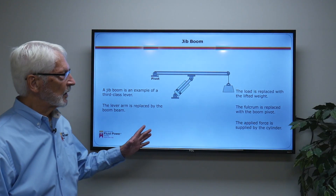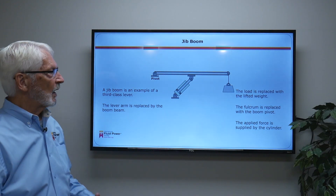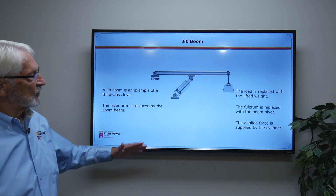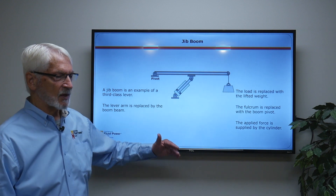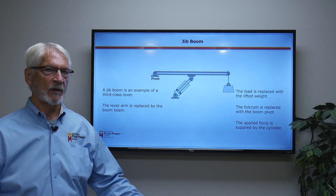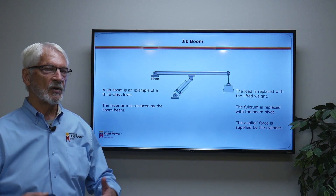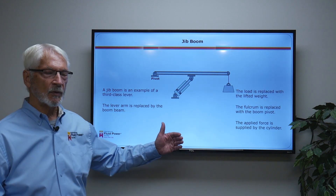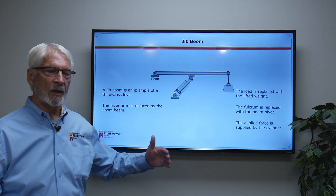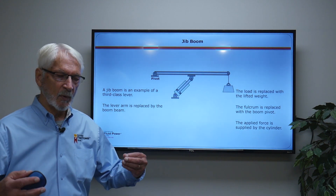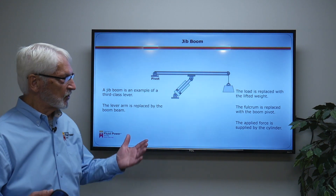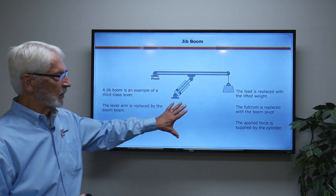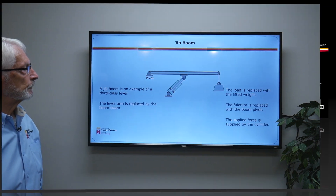It's a third-class lever because the third-class lever is always at a disadvantage. It is always going to take more effort to lift the load than with the other levers — that's just the nature of the system. As we go through the math on this, you'll see this.